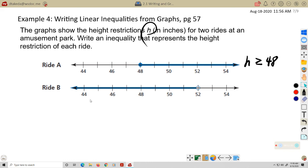For ride b, this looks like a little kid's ride, because in this case, h has to be less than 52 inches, but not equal to 52 inches, so we just leave that one like that, no equal bar.